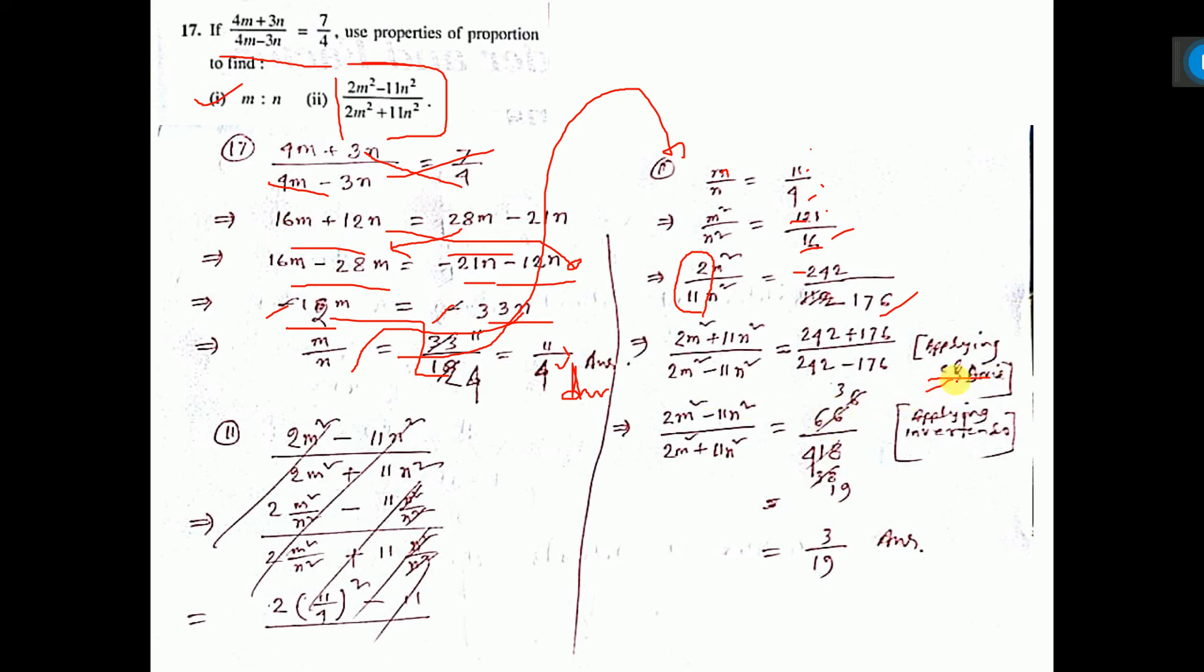See here written, but you apply full form. C and D I have written, you just write full form. What is componendo and dividendo? Numerator plus denominator by numerator minus denominator. Here also, 242 plus 176 by 242 minus 176.